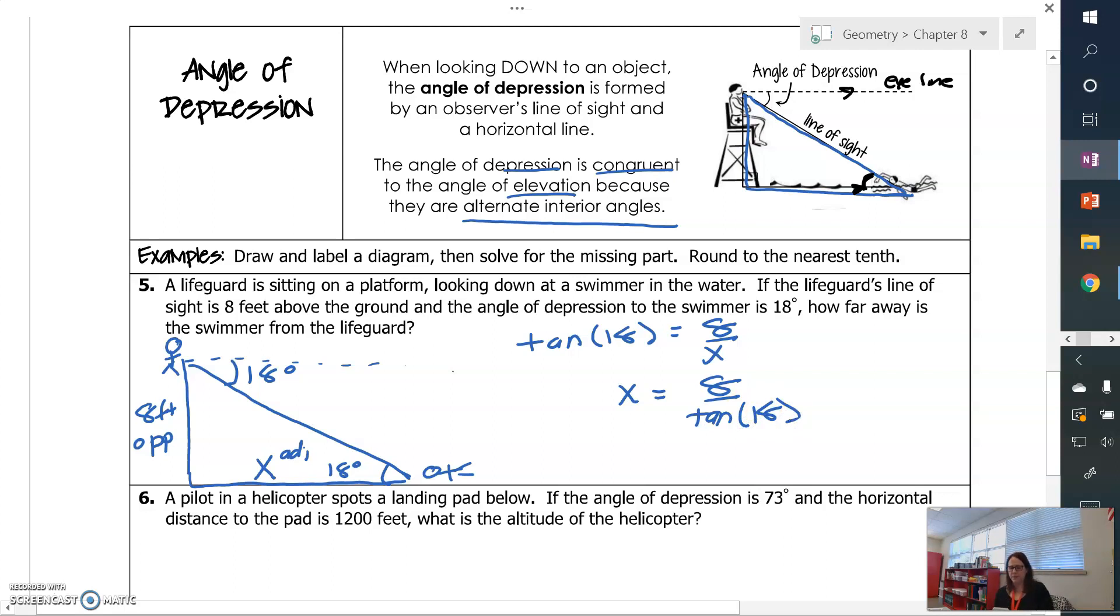you're going to end up with x equals 8 over tangent 18. So 8 divided by a tangent of 18 is 24.6.